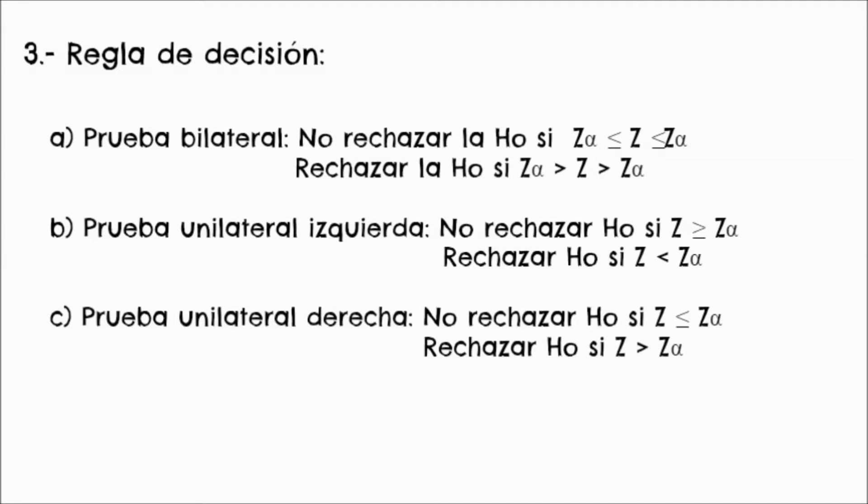Paso número 3, regla de decisión. Para la prueba bilateral, no se rechaza la hipótesis nula si el valor de Z no se encuentra fuera de los puntos críticos; se rechaza si el valor de Z se encuentra fuera de los puntos críticos. Para la prueba unilateral izquierda, no se rechaza si Z es mayor o igual al punto crítico; se rechaza si Z es menor al punto crítico. Para la prueba unilateral derecha, no se rechaza si Z es menor o igual al punto crítico; se rechaza si Z es mayor al punto crítico.